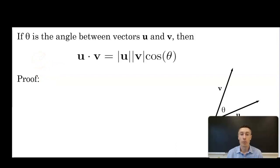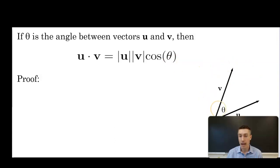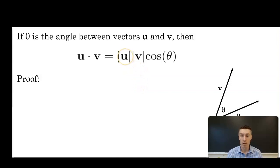The second way to compute the dot product: if theta is the angle between vectors u and v, then u·v = |u||v|cos(θ). We can see this visually — we have vector u, vector v, and theta is the angle between them. We often refer to this as the geometric definition of the dot product. Here we don't need to know the components; we need the magnitudes of the two vectors and the angle between them.